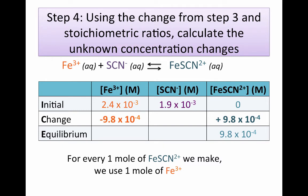Now let's look at thiocyanate ion. Again, we have a one-to-one ratio: for every one mole of complex we make, we use one mole of thiocyanate ion. So we made 9.8 × 10⁻⁴ molar of our complex, and we did that by using up 9.8 × 10⁻⁴ molar of thiocyanate.